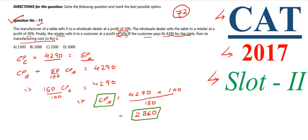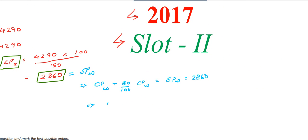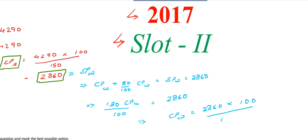The cost price of the retailer is also equal to the selling price of the wholesaler, since the wholesaler sells the table to the retailer. The wholesaler keeps a 30% profit on his cost price, so: CP of wholesaler + 30% of CP = 2860, giving us 130 × CP of wholesaler / 100 = 2860. Solving this, the cost price of the wholesaler equals 2860 × 100 / 130 = 2200 rupees.